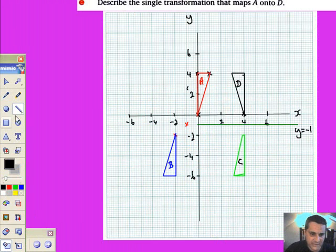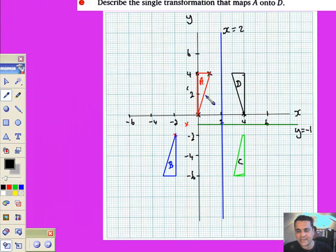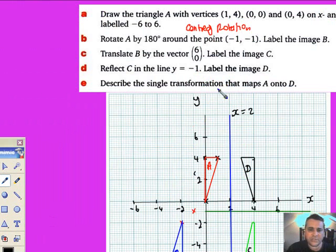How do you get from A to D? I can see a very clear line of symmetry there, or line of reflection, or equation into which A is reflected onto D. So let's draw that in, use blue. It cuts straight through there.